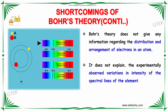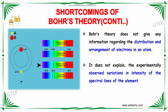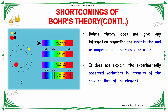Bohr's theory does not give information regarding the distribution and arrangement of electrons in an atom. It does not explain the experimentally observed variation in the intensity of spectral lines of the elements. This is a major drawback of Bohr's theory.